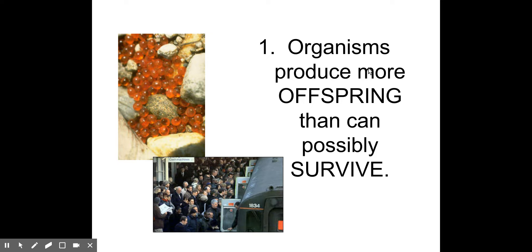Think of the fish eggs in Finding Nemo — there we have an example of a fish and the large number of eggs it would have laid. There are a lot of potential offspring there, and probably too many than can possibly survive because of limited resources present in the environment. In certain locations around the planet we have problems with overpopulation.